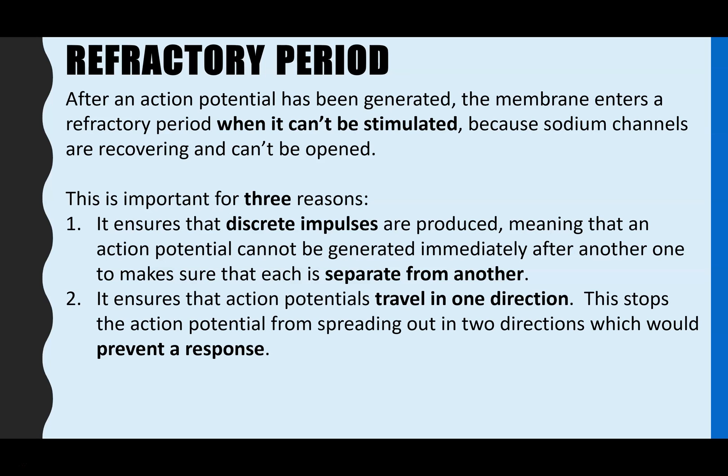It also ensures that the action potential can only travel forwards in one direction. Now, that is really important because if that stimulus and the action potential wasn't traveling in one direction, you'd end up having the spreading out of those sodium potassium ions in two directions. They'd go forwards and backwards along the axon. And if that happened, it would prevent reaching the threshold potential and it would prevent you ever being able to respond to a stimulus.